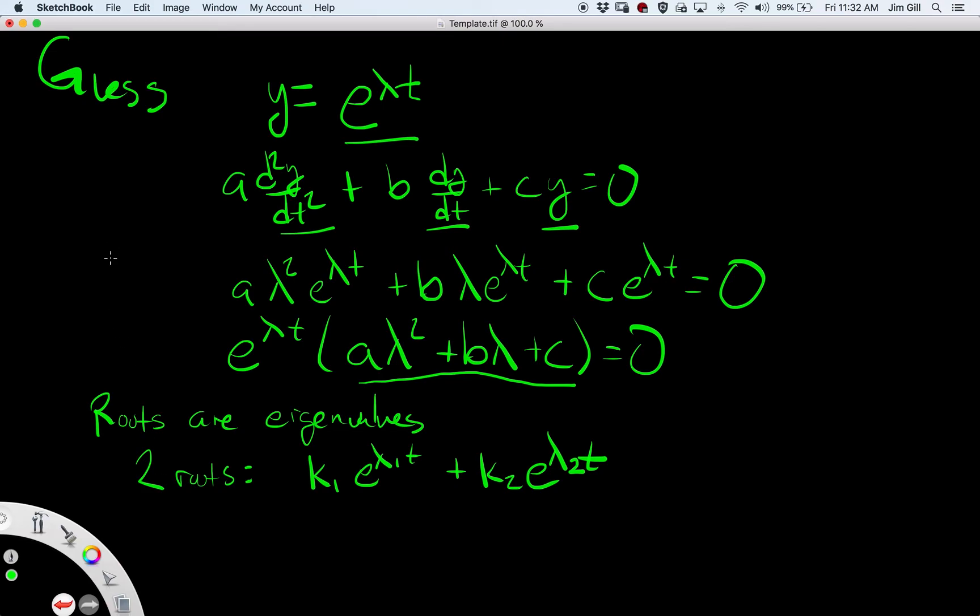Now, another possibility is we have just one root. Under that instance, here's what our solution looks like: it's k1 e to the lambda 1t plus k2 times t e to the lambda 1t. We only have one eigenvalue. That's what our solution is going to look like, and this corresponds to back when we were looking at systems where we had one root.